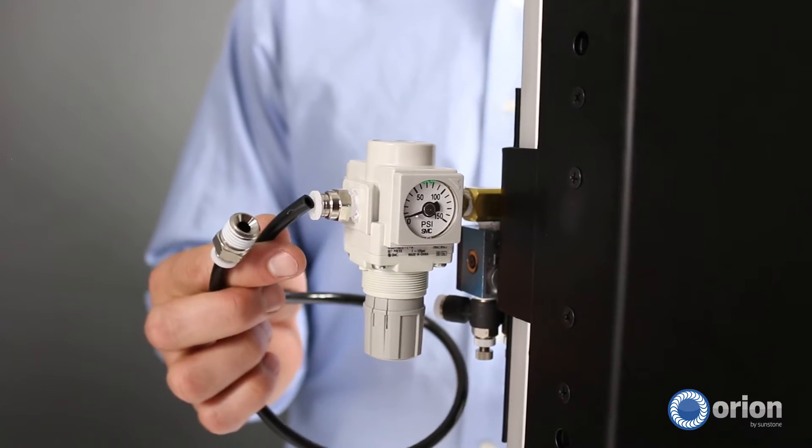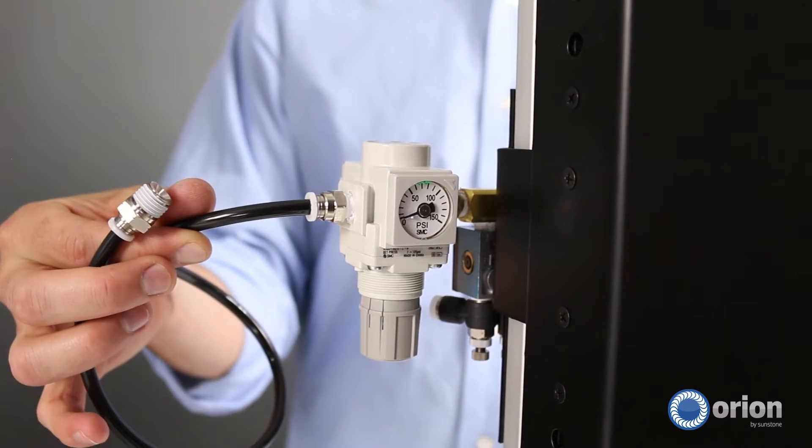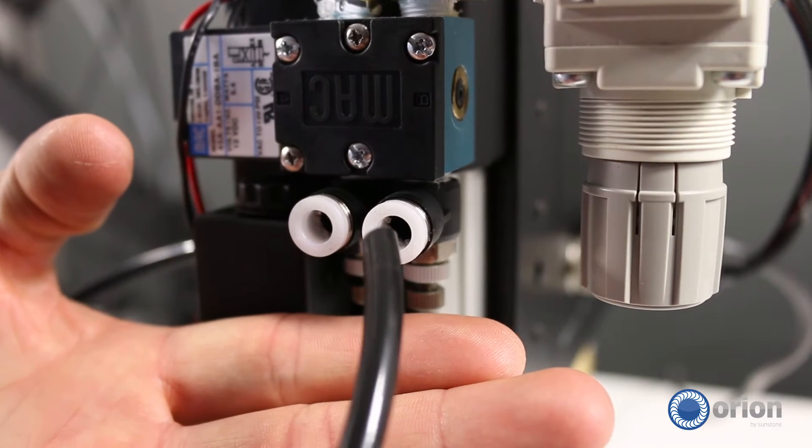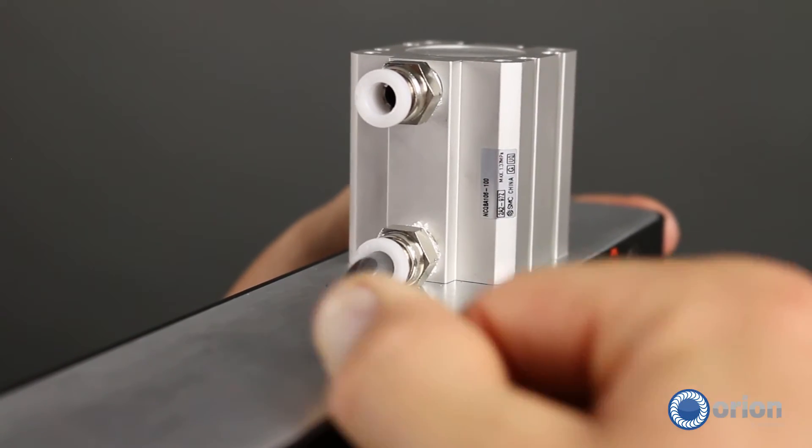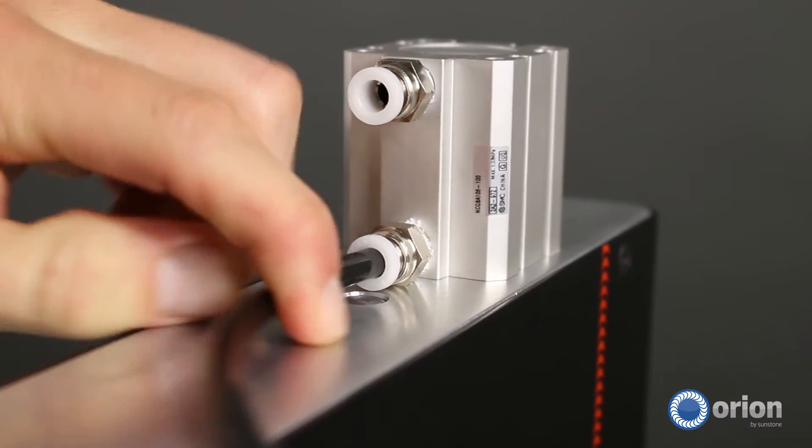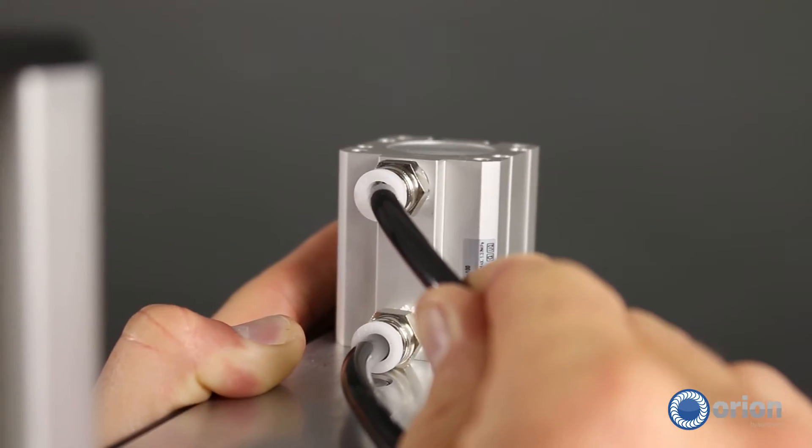Plug the tube from the compressed air tank into the air valve system on the back of the weld head. The right port on the back of the weld head connects to the bottom port on the top of the weld head. The left port on the back of the weld head connects to the upper port on the top of the weld head.